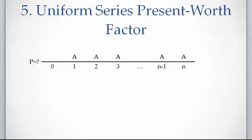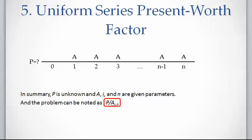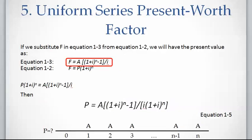The fifth group covers the set of problems where P is the unknown parameter and A, i, and n are given variables. In these problems, we have a uniform series of equal investments A at the end of each time period for n number of periods at compound interest rate i. The problem asks you to calculate the accumulated present value of all investments P. We can summarize these questions using factor notation: P is the unknown variable and should be on the left side, and A is given and should be written on the right side.